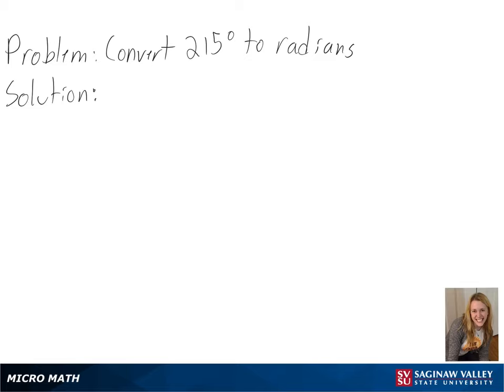Our problem is to convert 215 degrees into radians. To start out, we know that 180 degrees is equal to pi radians, so we can divide each side by 180 to know the amount of radians in one degree.